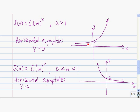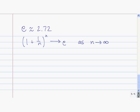If a function exhibits this behavior, we call that exponential growth. If a function exhibits the second type of behavior, so it goes to 0 as x goes to infinity, we call that exponential decay.